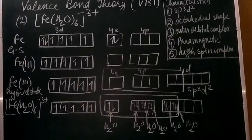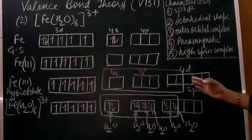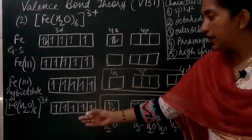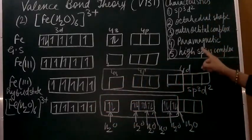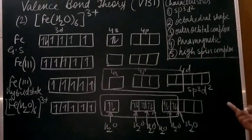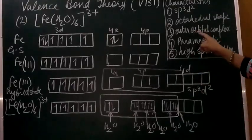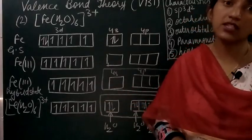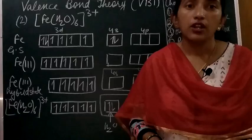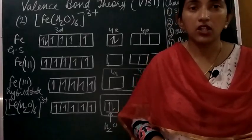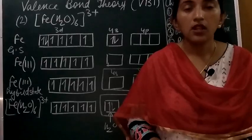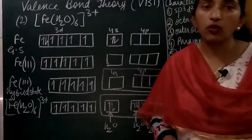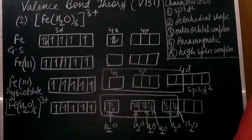Whenever we have an outer orbital complex where nd orbitals are involved in hybridization, the number of unpaired electrons is maximum, making it a high spin complex. The spin of the unpaired electrons is high, which is why it is called a high spin complex. Today we discussed complexes with coordination number 6, forming either inner or outer orbital complexes. In the next class, we will discuss complexes where the coordination number is 4 and 5. Till then, practice these types of examples.